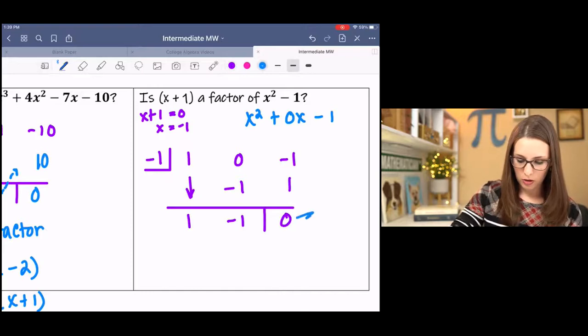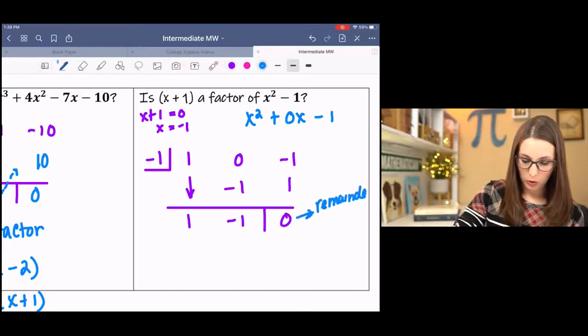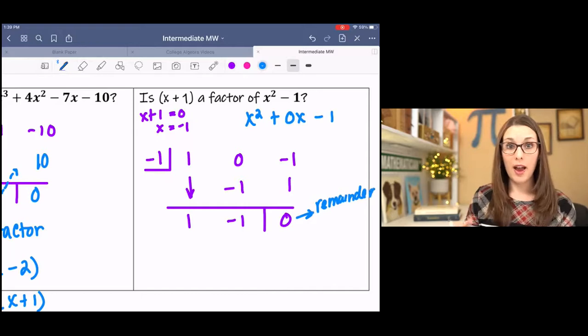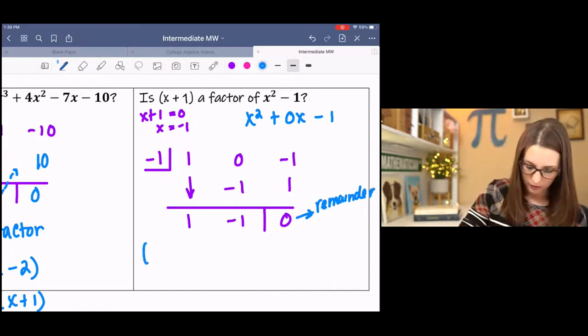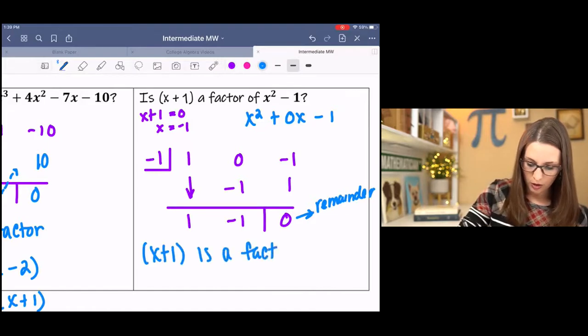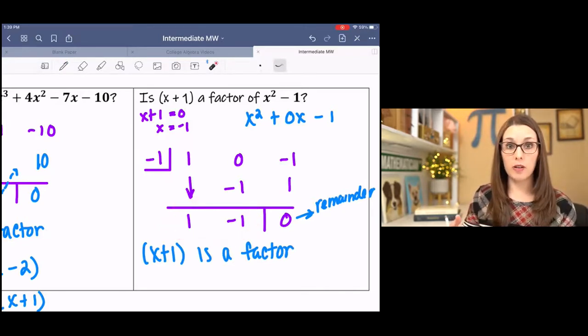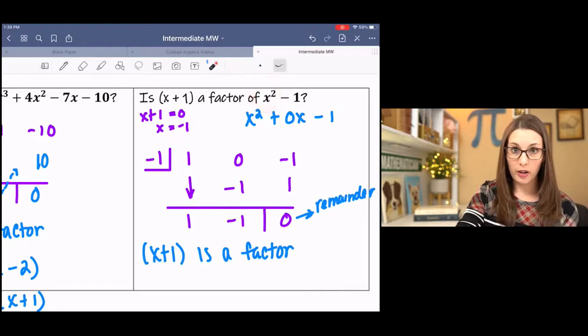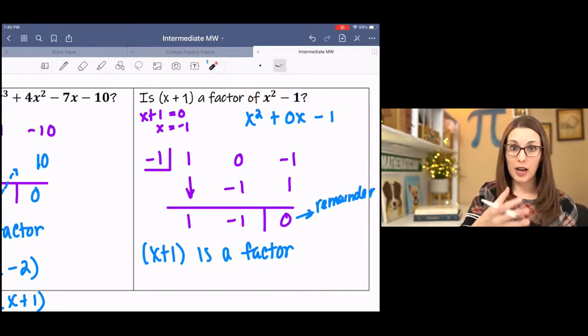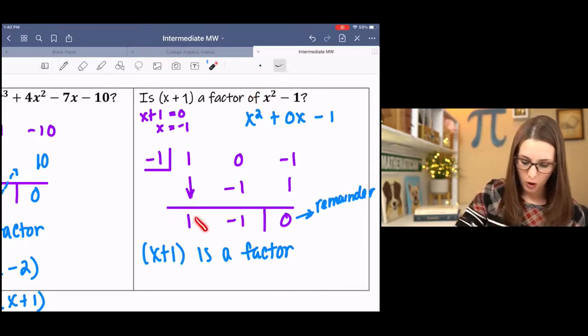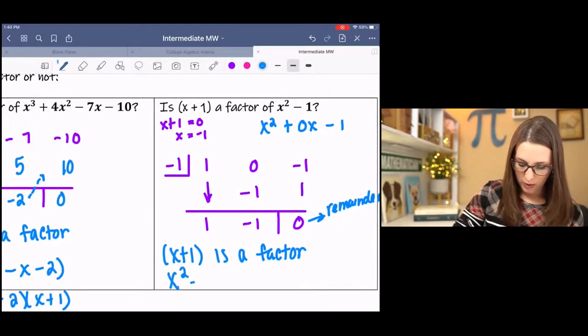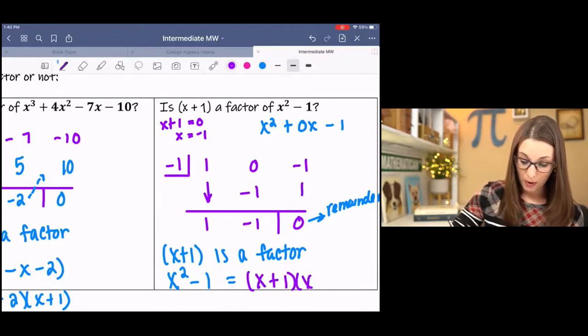This is our remainder. So x squared minus 1 factors, which means that x plus 1 is a factor. And we can also see that the other factor, we have the coefficients of the other factor. Since we started with x squared, we've reduced it down by 1 power. This is 1x minus 1.